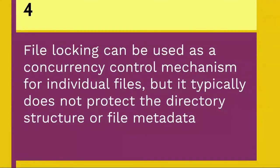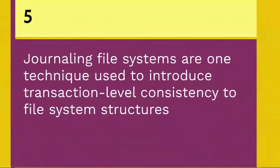File locking can be used as a concurrency control mechanism for individual files, but it typically does not protect the directory structure or file metadata. For instance, file locking cannot prevent TOCTOU race conditions on symbolic links. File locking also cannot automatically roll back a failed operation such as a software upgrade. This requires atomicity.